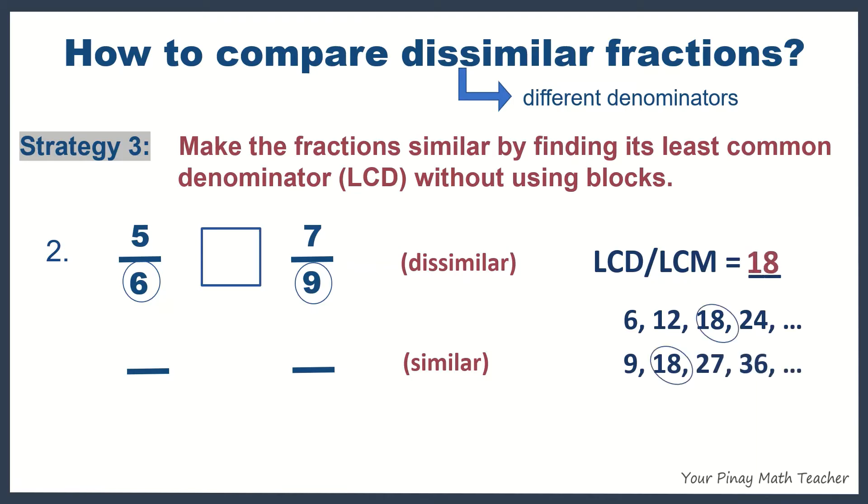Place 18 under the fraction bar and then multiply 6 by a certain number to get 18. So, what is it? Yes, it's 3. Multiply also 5 by 3. What will you multiply to 9 in 7 ninths to get 18? Of course, by 2.